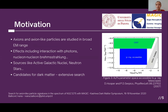Axions and axion-like particles are studied across a broad range of the electromagnetic spectrum. Figure three shows the part accessible by gamma rays. Seeing this article, we decided this should also be done with MAGIC in our energy range. We decided to search for effects of ALP-photon interactions causing oscillations in spectra of active galactic nuclei, and also in nucleon-nucleon Bremsstrahlung present in neutron star cooling, which we are currently researching.